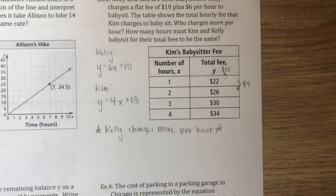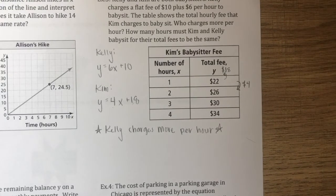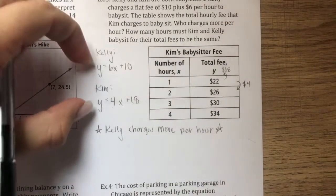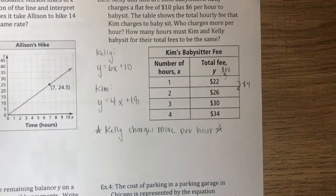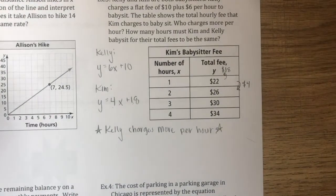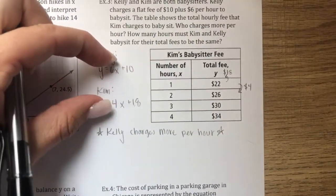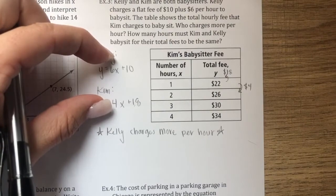Kelly charges more per hour. To figure out how many hours they need to work for their fees to be the same, we set their two equations equal to each other. Since y represents pay after x hours, we set 6x plus 10 equal to 4x plus 18.